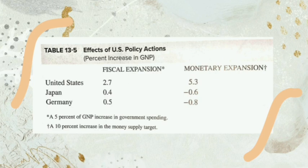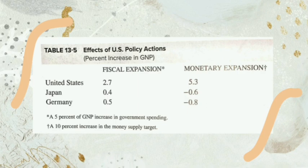This table shows estimates of the quantitative impact of US fiscal and monetary expansion on GNP in the United States and abroad under flexible exchange rates. The table reports the percentage change in GNP over the first two years in response to two experiments: a sustained increase in government spending equal to 5% of GNP, and a monetary expansion of 10%. In line with our model, a US fiscal expansion raises foreign output, while a US monetary expansion reduces output abroad.